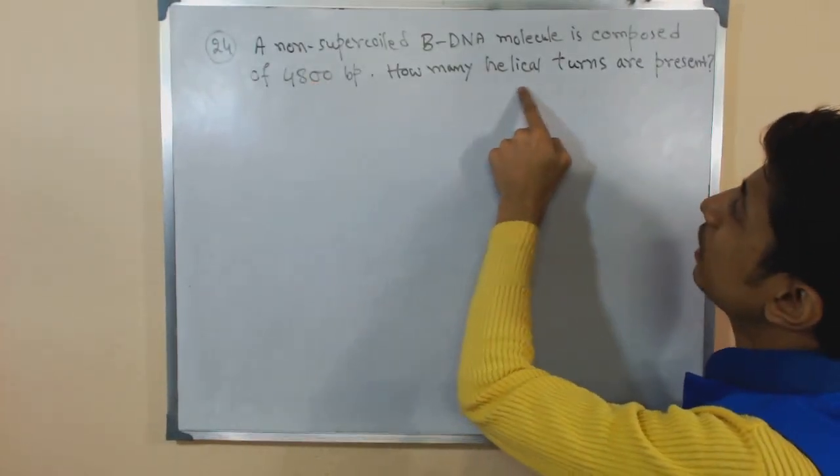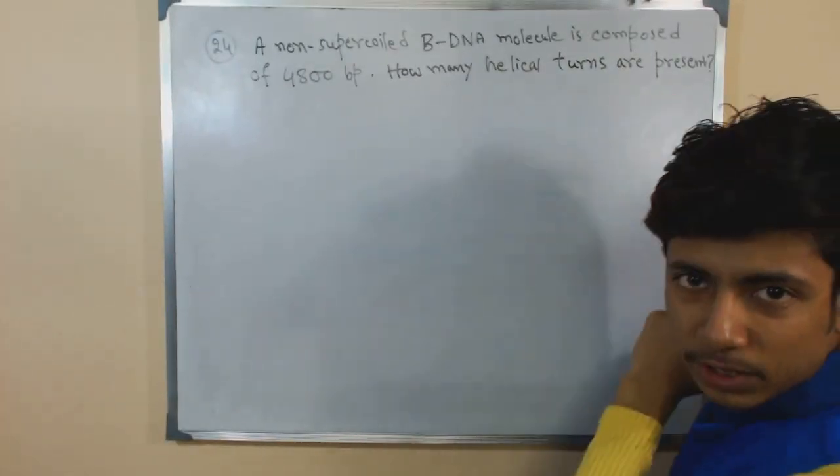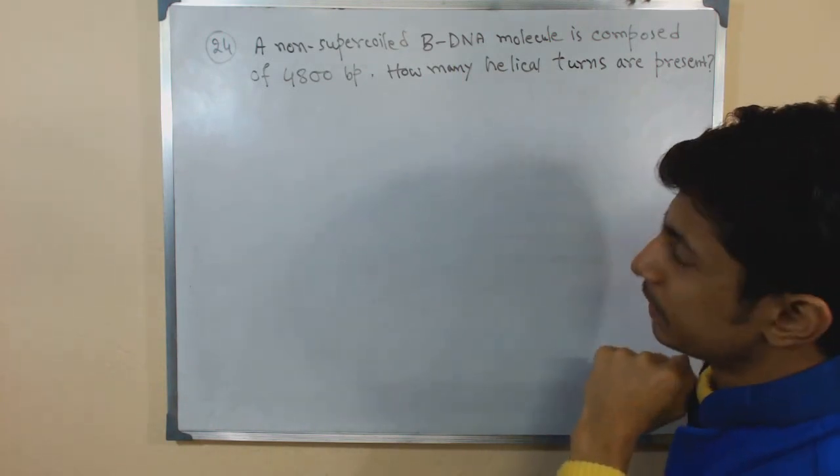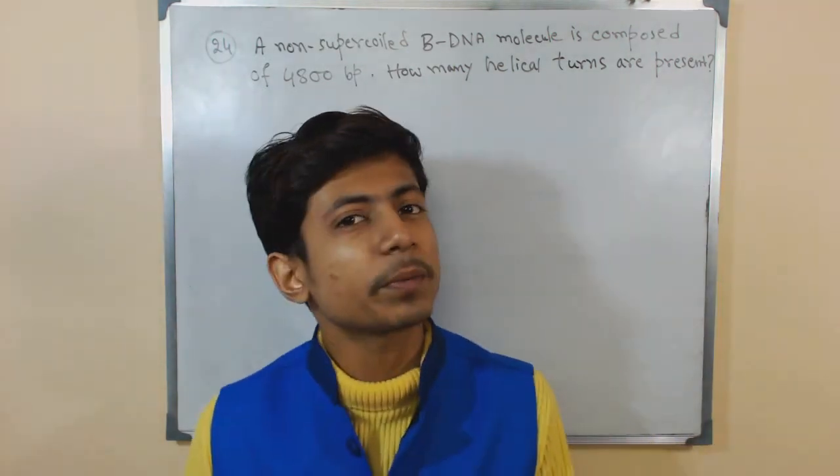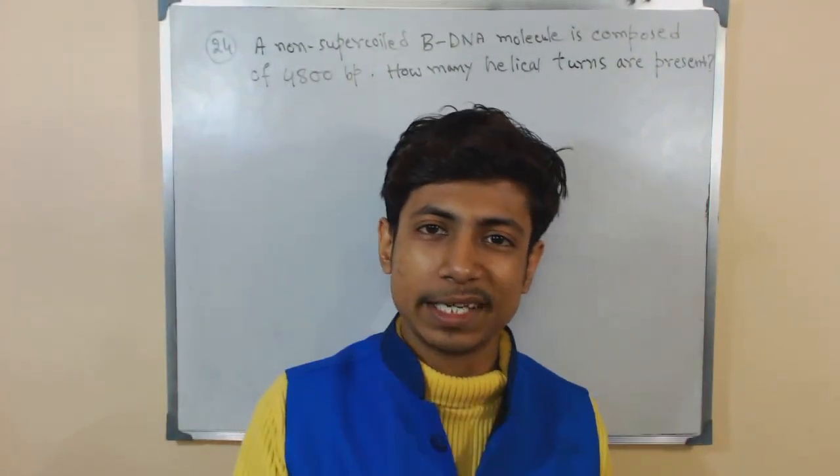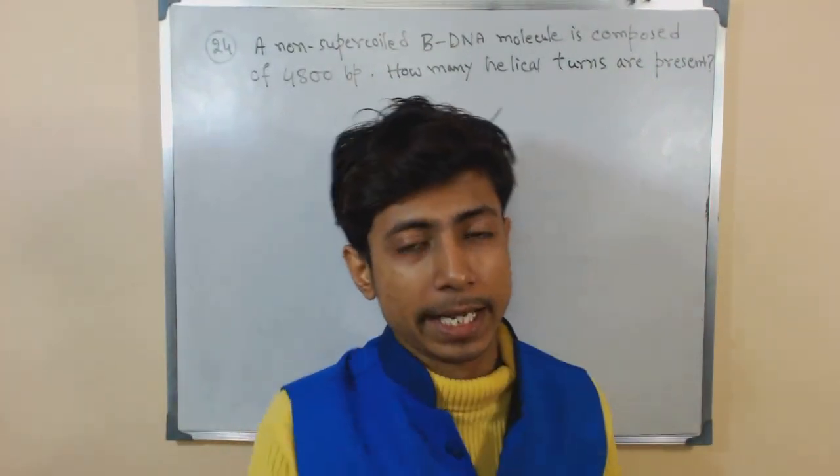So how many helical turns are present? That is the question. Now to answer this question, what we need to know is how many number of bases should be there per turn of B-DNA?